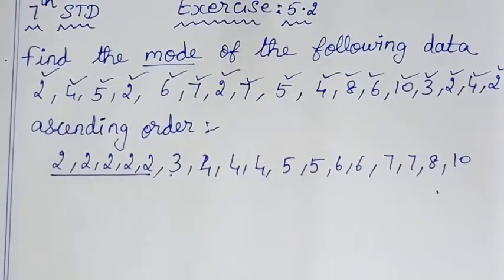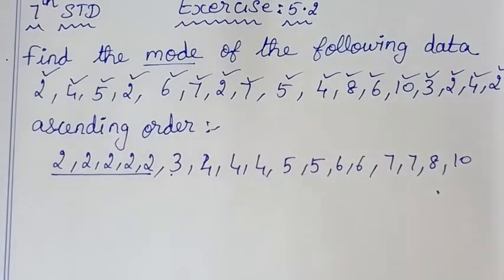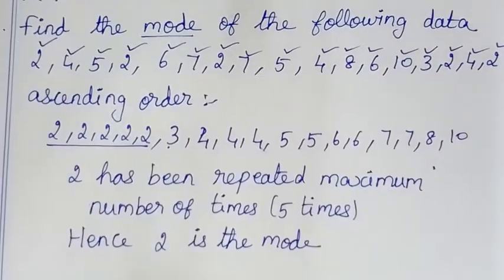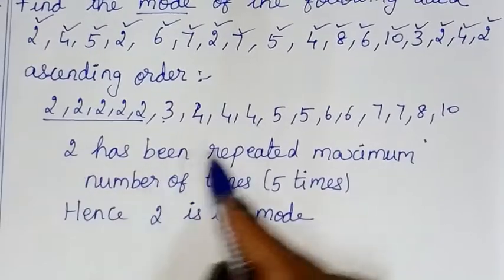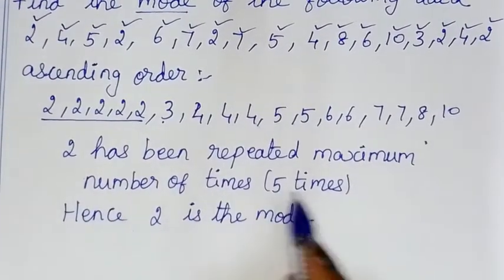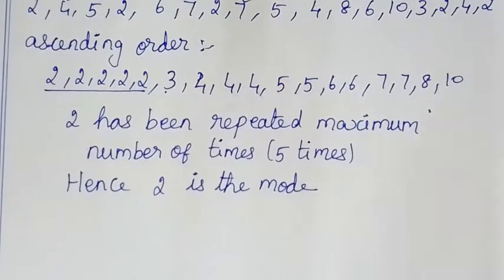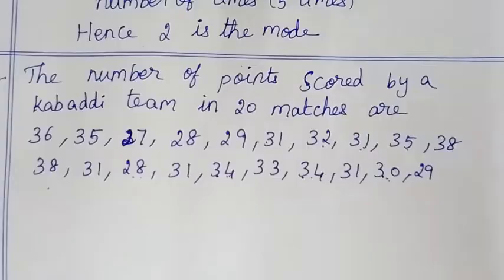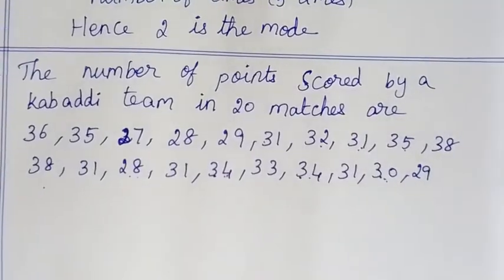So 2 is the mode. 2 has been repeated the maximum number of times, that is 5 times. Hence, 2 is the mode.